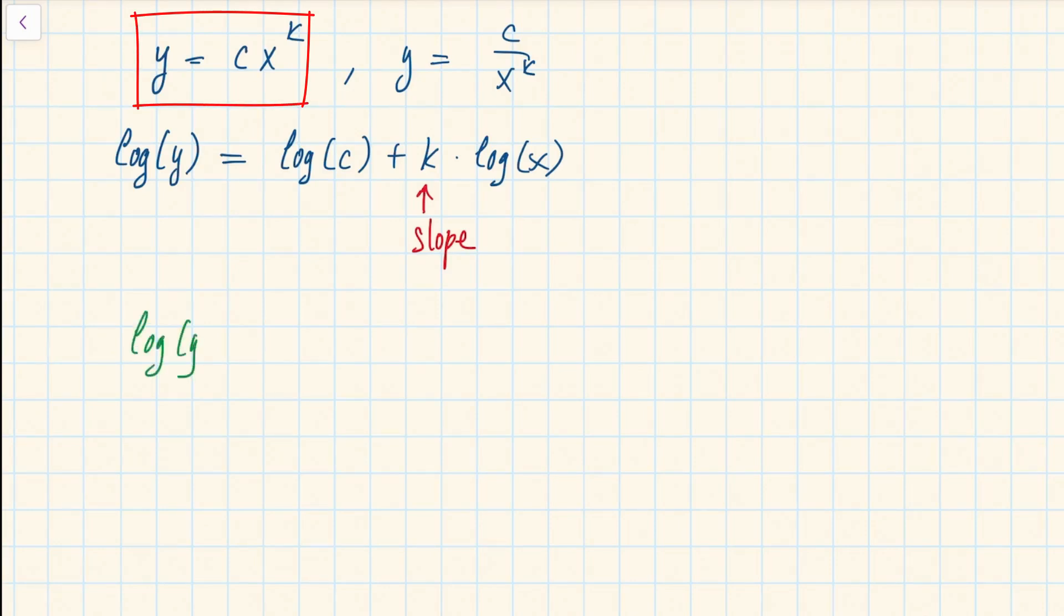So for example, if you know that logarithm of y is equal to some constant, let's say minus 1.07 times logarithm of x, you can exponentiate both sides. You get that y is equal to 10 to the power b divided, in this particular case, by x to the power 1.07, which is just some constant c divided by x to the power 1.07.